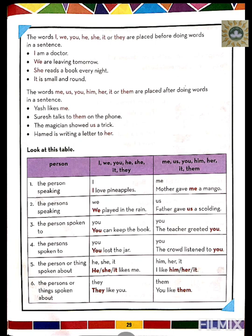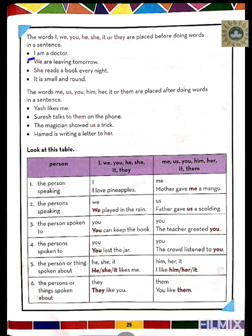The words I, we, you, she, he, it, or they are placed before doing words in the sentence. For example: I am a doctor. We are leaving tomorrow. She reads a book every night. It is small and round. In all these sentences you can see the pronoun placed before the verb.